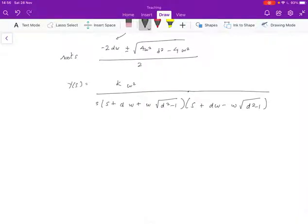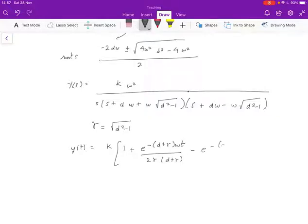And if we go ahead and expand it using partial fraction, let gamma be the square root of d squared minus 1, and then we will find that y(t), and this is tedious but relatively straightforward, there's really nothing special. It's 1 plus e to the minus (d plus gamma) omega t over 2 gamma (d plus gamma).